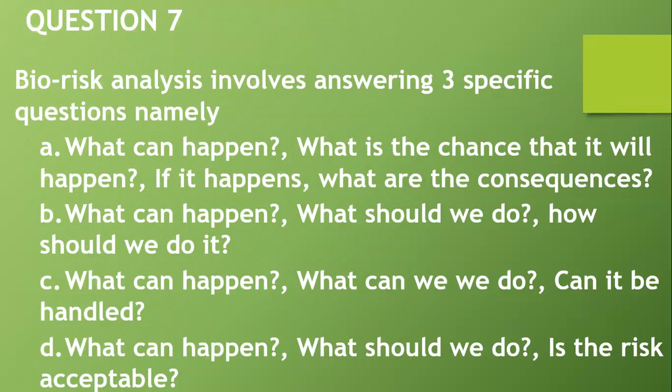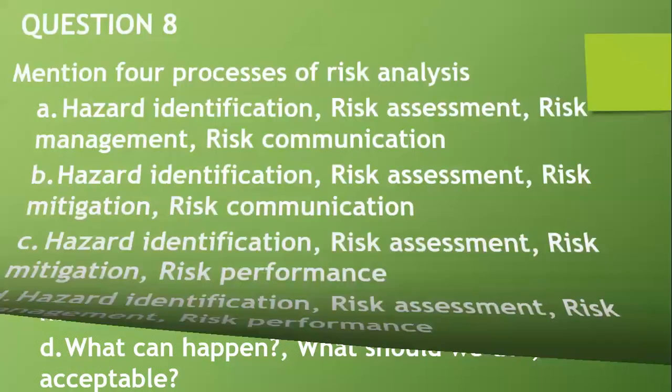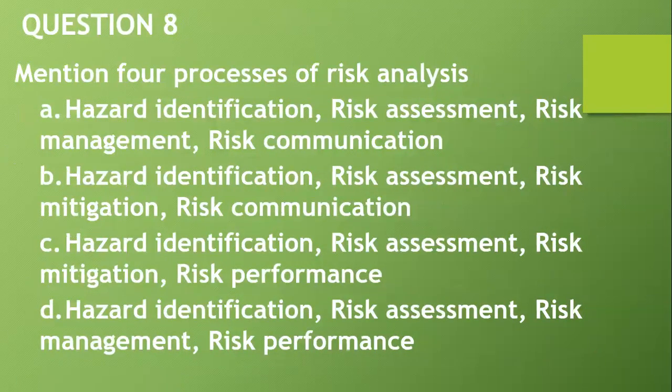Question seven: Biorisk analysis involves answering three specific questions. A, what can happen, what is the chance that it will happen, and if it happens, what are the consequences? B, what can happen, what should we do, how should we do it? C, what can happen, what should we do, can it be handled? D, what can happen, what should we do, is the risk acceptable? The answer is A.